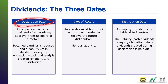The declaration date is the date that the company comes out and says we are going to pay a dividend. They announce it — they don't actually pay it that day, they just announce that they plan to give a dividend. Because the company has publicly announced it, they are now liable to pay that dividend.